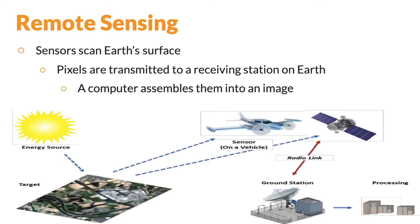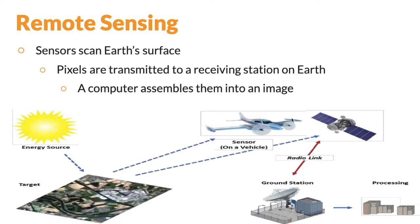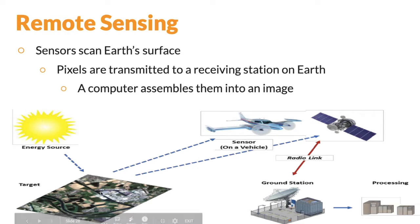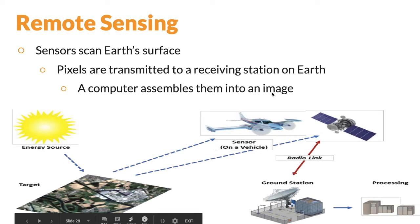Remote sensing is how information gets down to Earth and into a computer so we can use coordinates and data. Sensors scan the Earth's surface — the Earth's surface puts out energy, and these pixels from satellites and aircraft orbiting the Earth transmit those pixels back down to a receiving station. The energy reflects off the Earth, sensors take in that energy as information, and send it down via radio link to a receiving station. A computer then assembles all of that into an image or a map, something we can actually use.